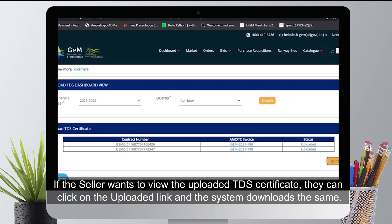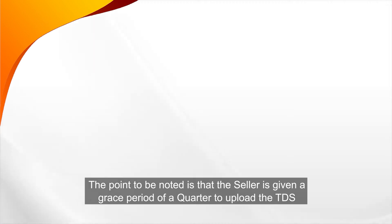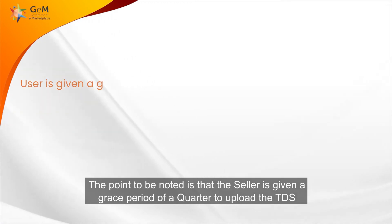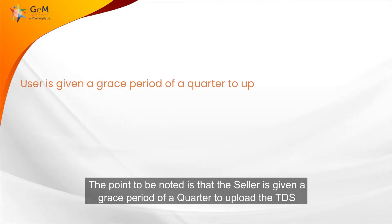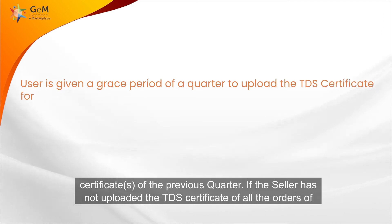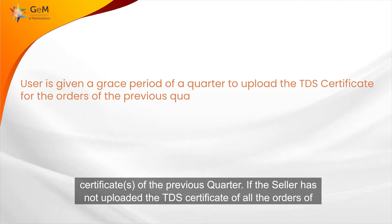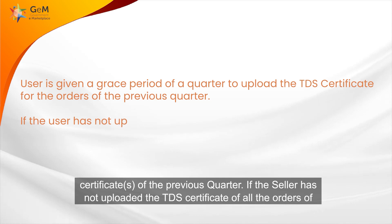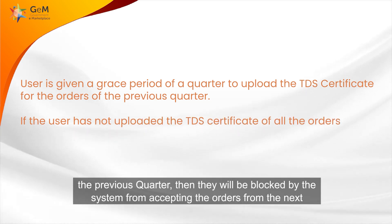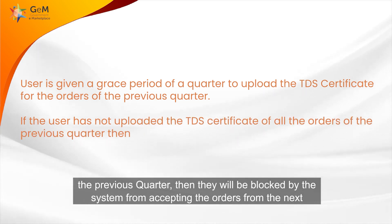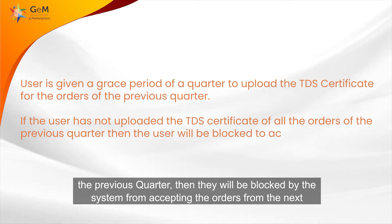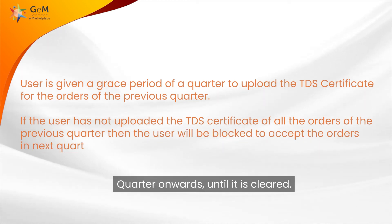If the seller wants to view the uploaded TDS certificate, they can click on the uploaded link and the system downloads the same. The point to be noted is that the seller is given a grace period of a quarter to upload the TDS certificate of the previous quarter. If the seller has not uploaded the TDS certificate for all the orders of the previous quarter, they will be blocked by the system from accepting orders from the next quarter onwards until it is cleared.